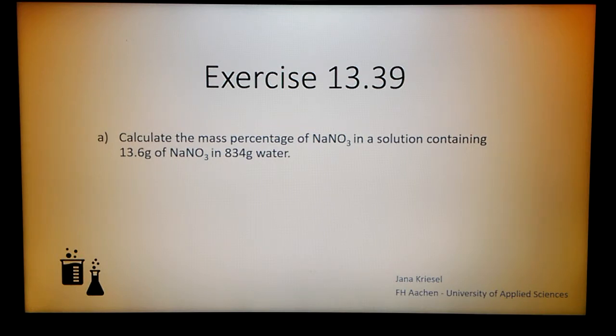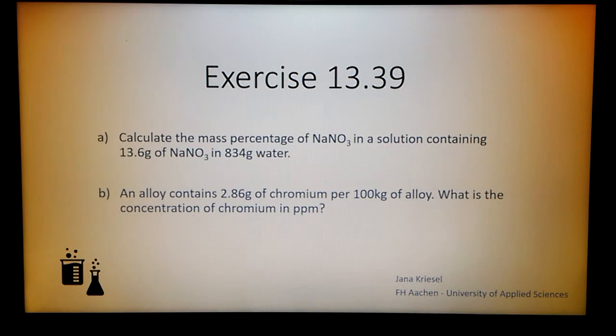Afterwards I'm going to teach you how to convert your results into ppm by answering the second question, which is, an alloy contains 2.86 grams of chromium per 100 kilograms of alloy. What is the concentration of chromium in ppm?